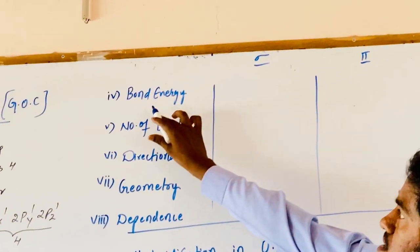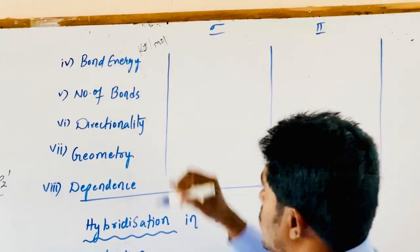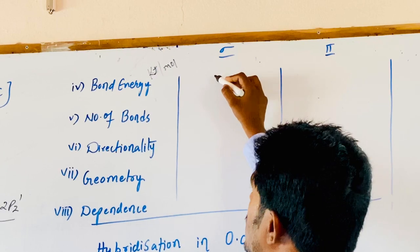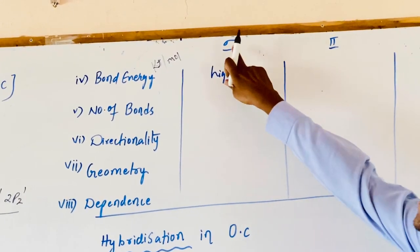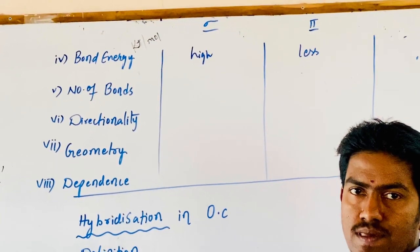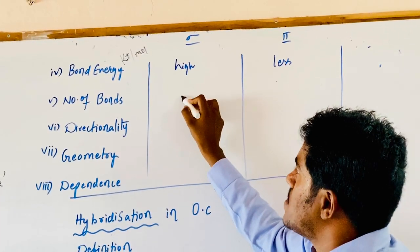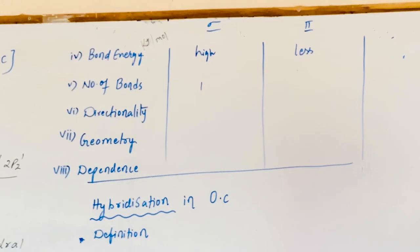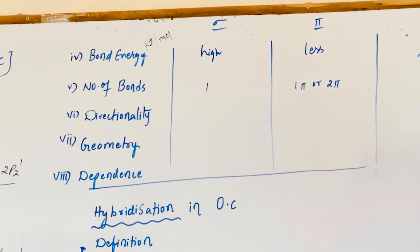Coming to bond energy in kilojoules per mole — the bond energy of a sigma bond is high. A pi bond takes less energy to break as compared to sigma. Regarding number of bonds: for sigma, the number of bonds is 1. For pi, between combining atoms there can be either 1 pi bond or 2 pi bonds.